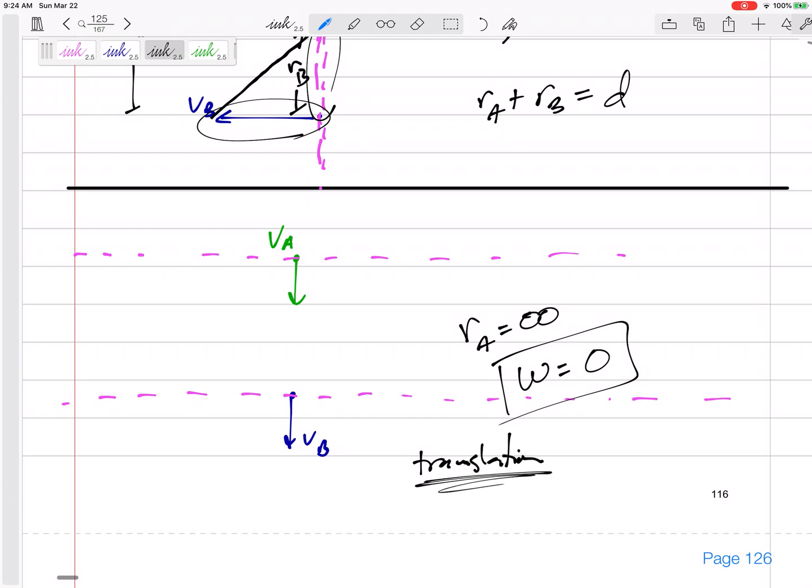And if your angular velocity is zero, think about V_A equals V_B plus omega cross R. If your omega is zero, then your relative term is zero, then V_A is equal to V_B.